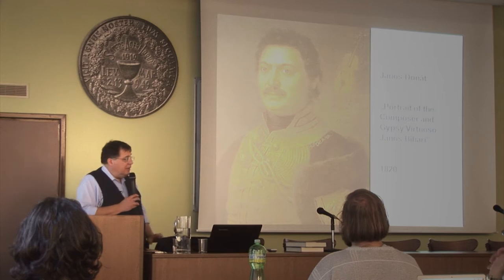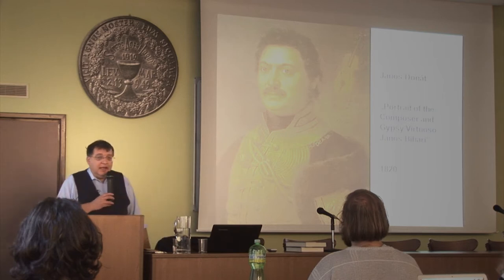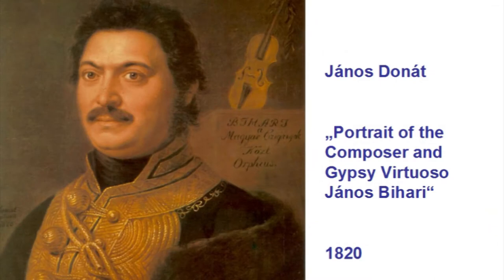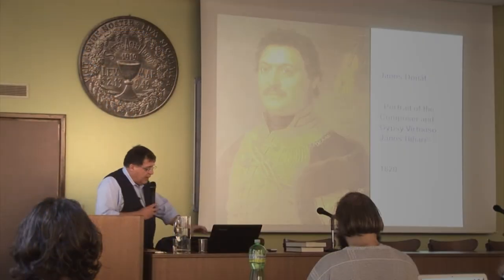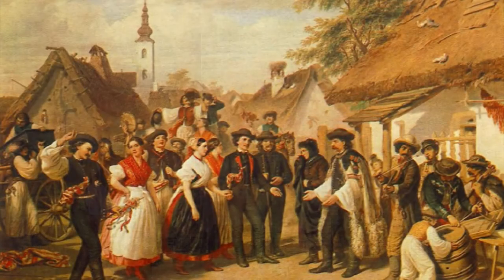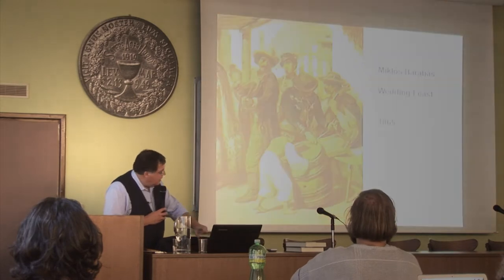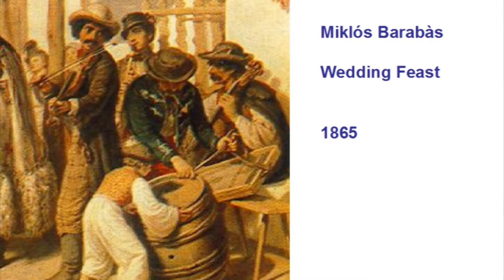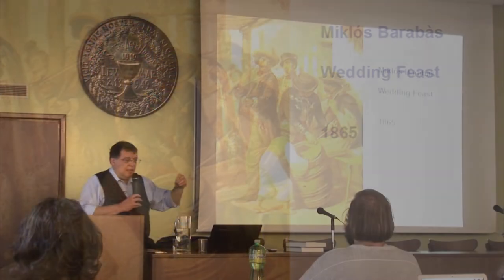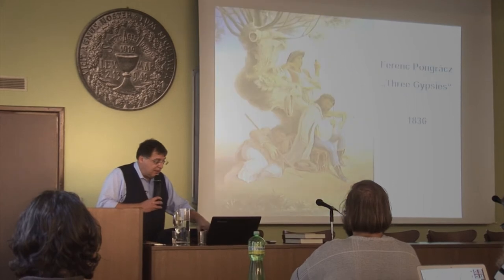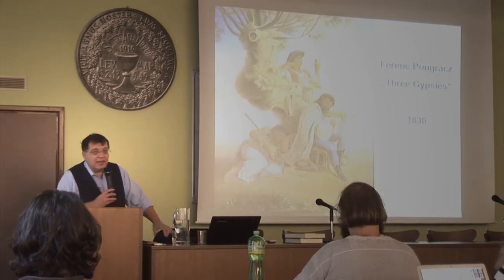This change in status we can also see in the visual representation. Until the beginning of the 19th century, the Roma had a very specialized place in European society, but they had a place in it. We see them as musicians, always in the context of European society and civilization. This changes dramatically in the 19th century, and Romanticism is the reason for that.